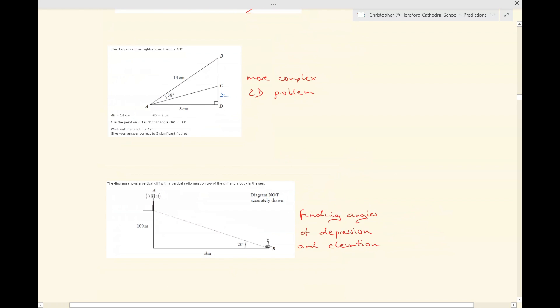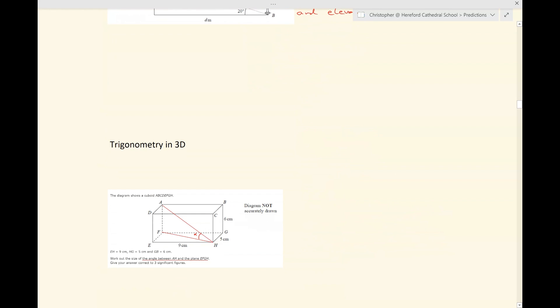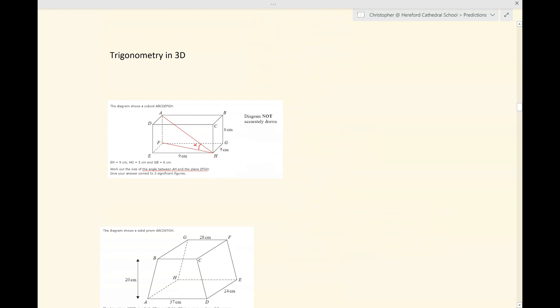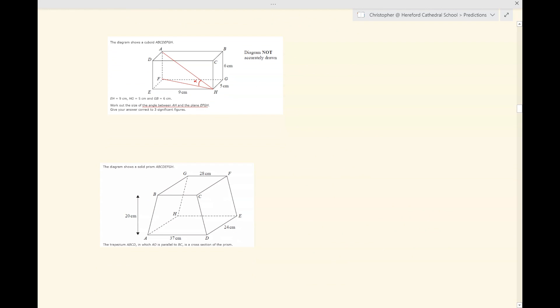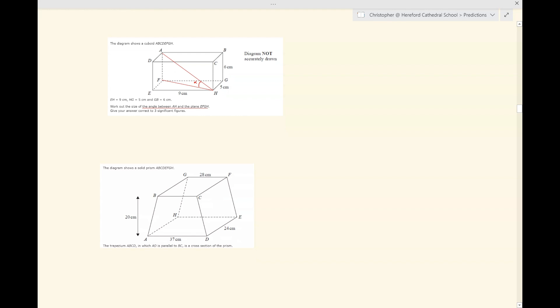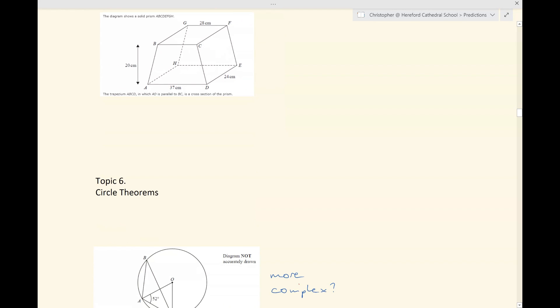You might find the 2D trig is hidden in questions involving the angles of depression or elevation, like they are in this question involving the cliff. But I would expect 2D trig in right-angled triangles to appear. I would also expect a question involving trigonometry in three dimensions to appear as well. The one at the top here is relatively straightforward because it's a straightforward cuboid. But the solids you can be presented with and the questions that you're asked can be more complex, such as this more complex solid here, this prism which has a trapezium as its regular cross-section.